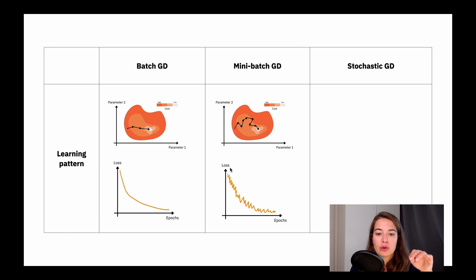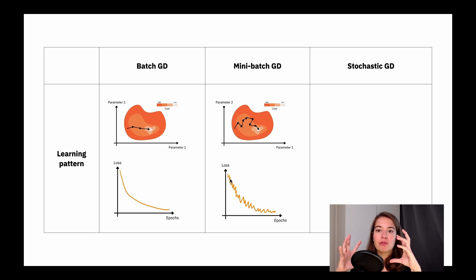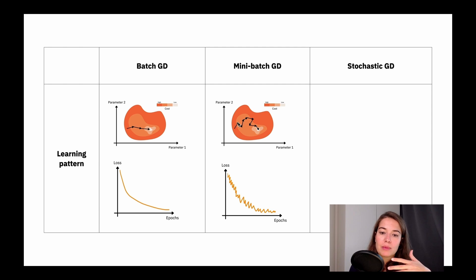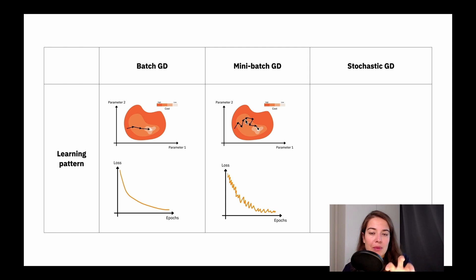For mini-batch gradient descent, the loss function behaves a little differently. During training you oscillate a bit while learning, because you're only seeing parts of your data. Just as your full data set doesn't perfectly represent the real world, your mini-batches don't perfectly represent your full data set — they are a subset — so you'll have some oscillations. One mini-batch might think one direction is lower cost, and the next mini-batch might think another direction is lower.